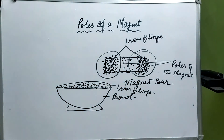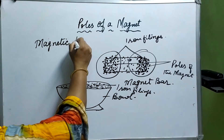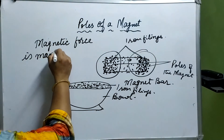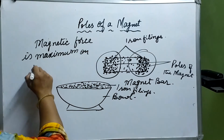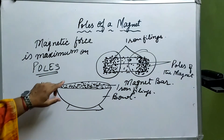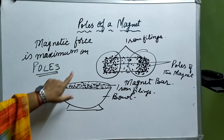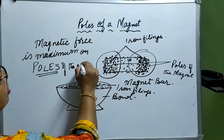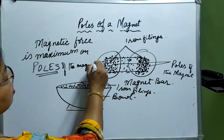So it means that Magnetic Force is maximum on Poles. These Magnetic Forces are maximum or stronger at the Poles of the Magnet.